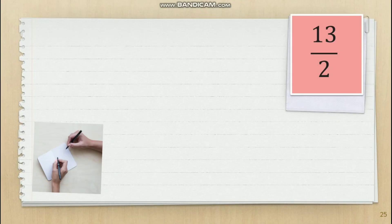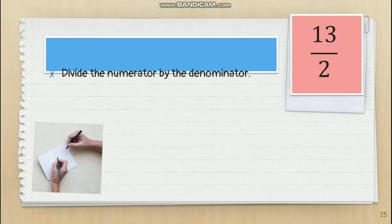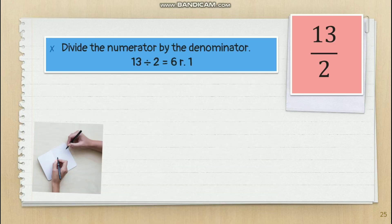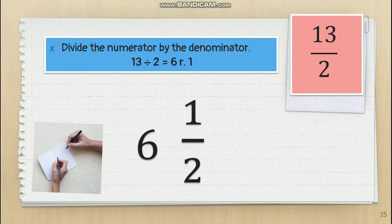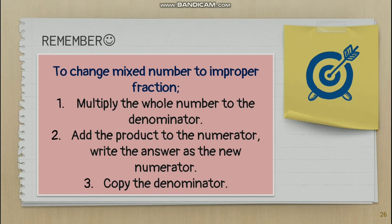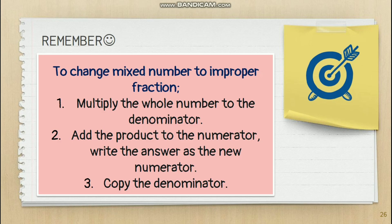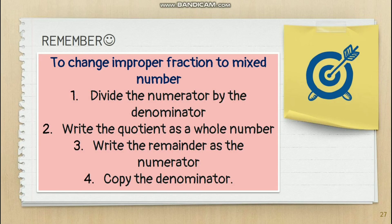Last, we have 13/2: 13 divided by 2 equals 6 remainder 1. So 6 is our whole number, 1 is our numerator, and copy 2 as the denominator — that's why 13/2 is equal to 6 and 1/2. Remember how to change a mixed number to an improper fraction and vice versa. Please take note of those processes. That's all for this video. Thank you.